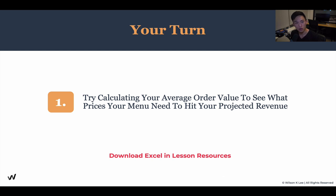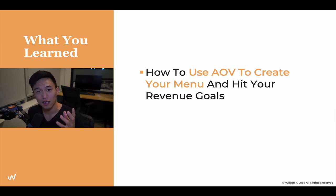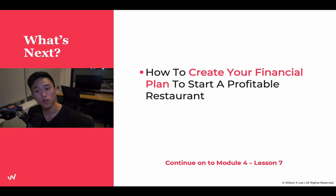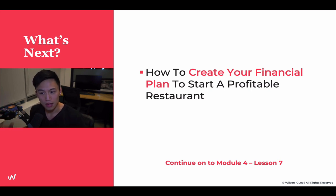Now it's your turn to calculate your AOV to see what pricing you need to set your menu at to hit your revenue numbers. I've created an Excel sheet for you — go to the link below, download it, and play around with the chart. In this lesson, we talked about using average order value to create your menu and get one step closer to hitting your revenue goals. In the next lesson, we're going to cover how to create a financial plan to start that profitable restaurant, tying everything we've learned together. See you in the next video.